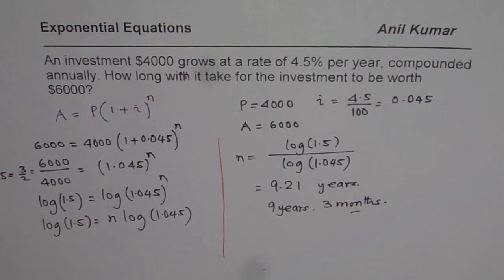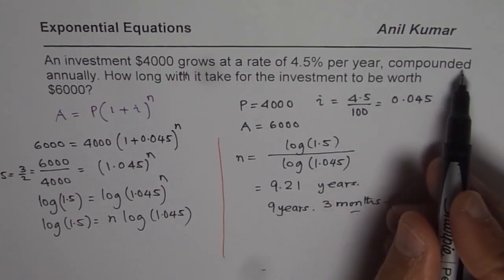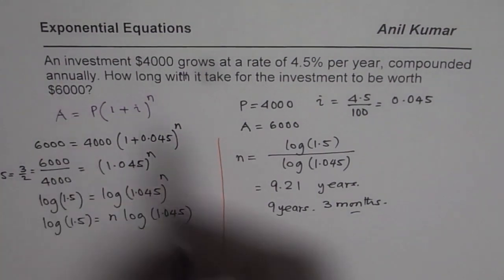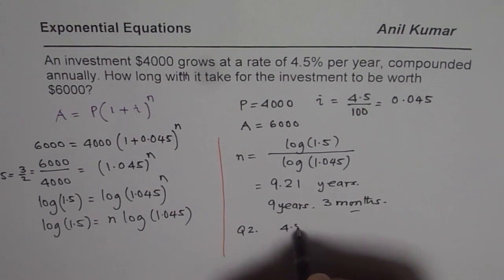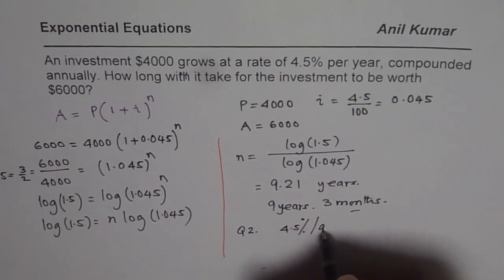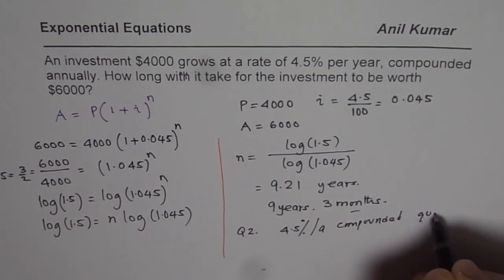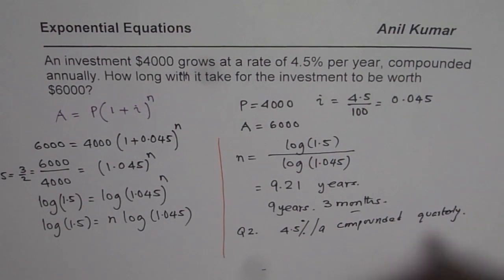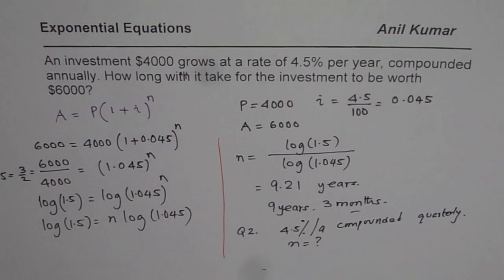Now, in the next video we will see - or what you can do is if we change the compounding period from annually to quarterly. So let this be a question for you: if it is 4.5% per annum compounded quarterly, then what is going to be the value of n? You can change the equation and then figure it out. I hope that will give you good practice. Thank you and all the best.